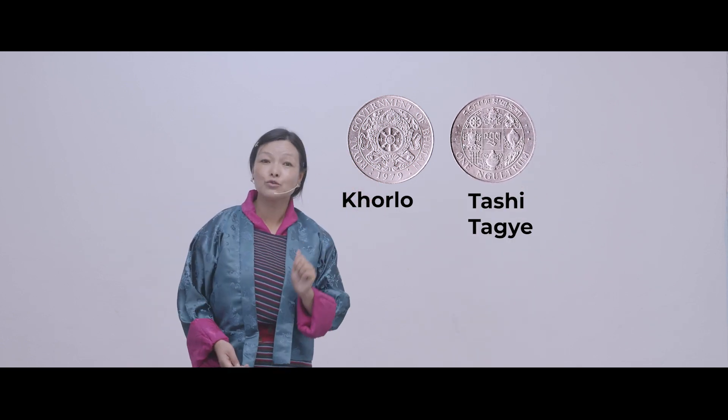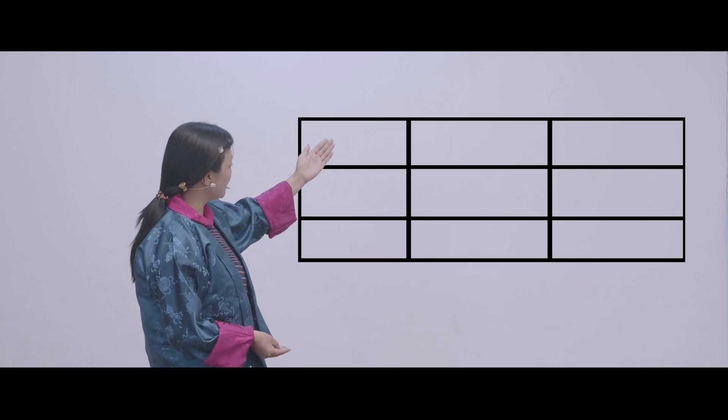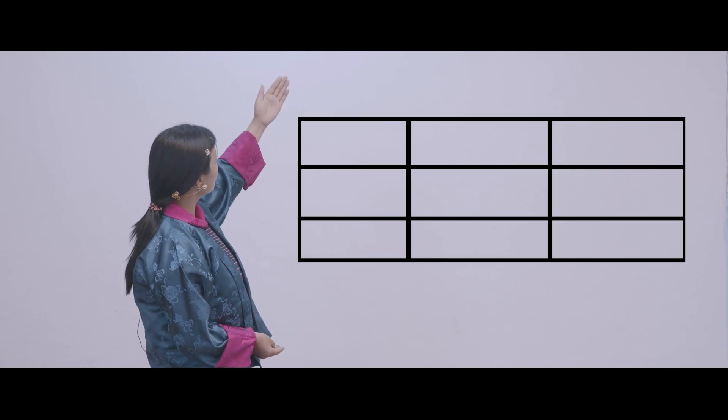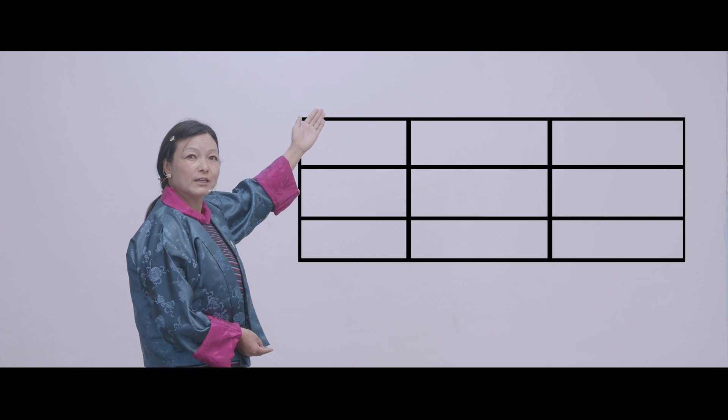Now we are going to do an experiment on experimental probability. We are going to throw the coin 40 times and record it. Before recording, you need to make sure you have the tables ready. This is the way you draw the table.